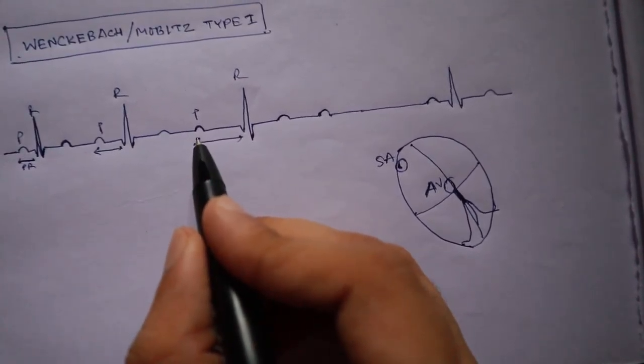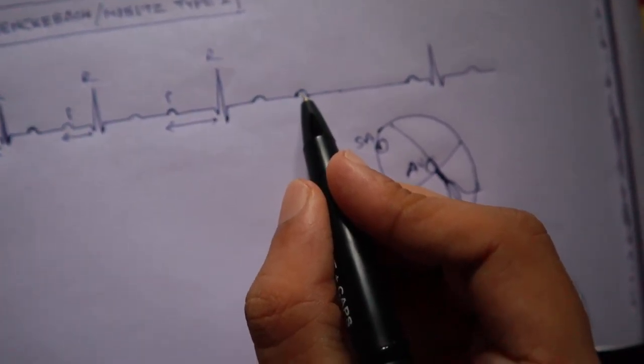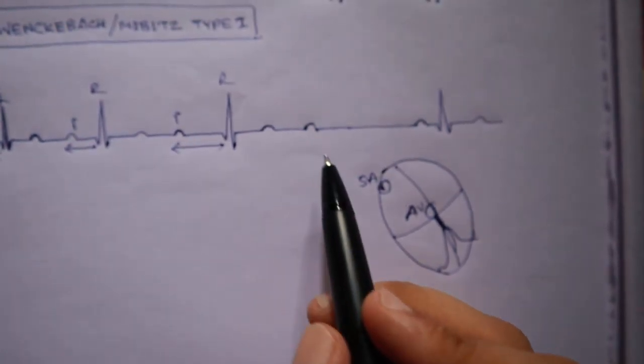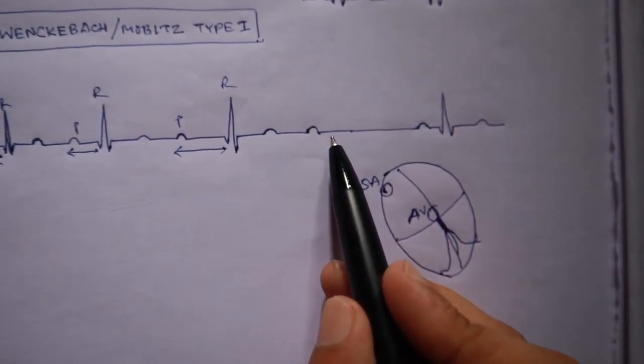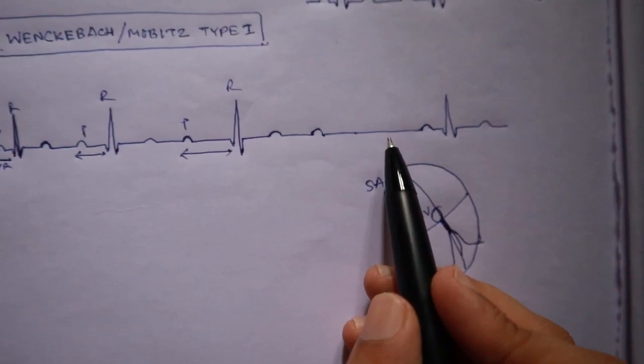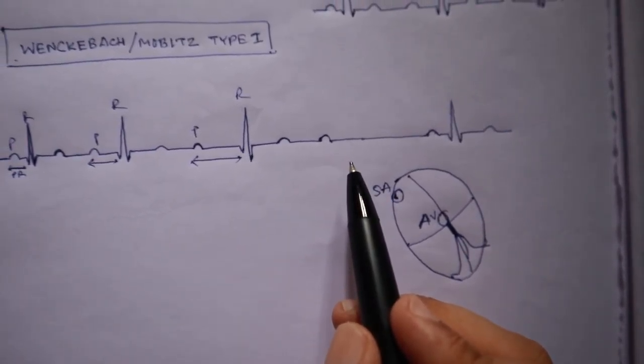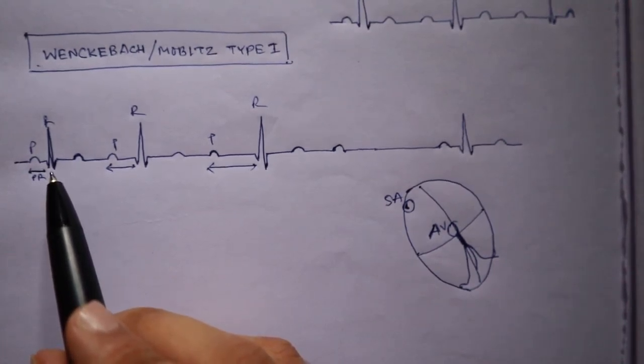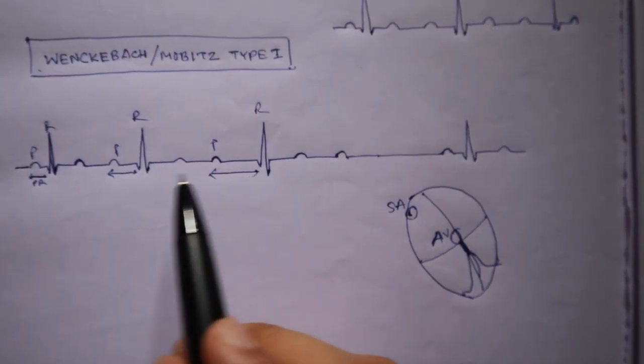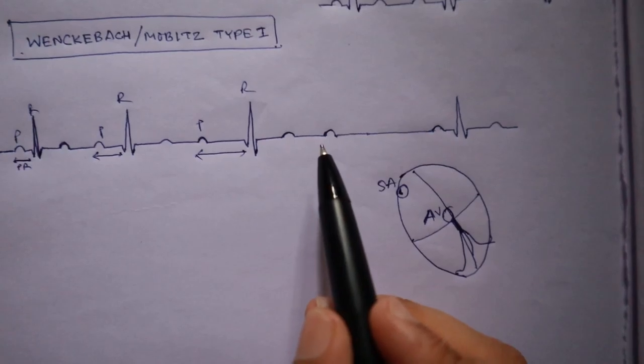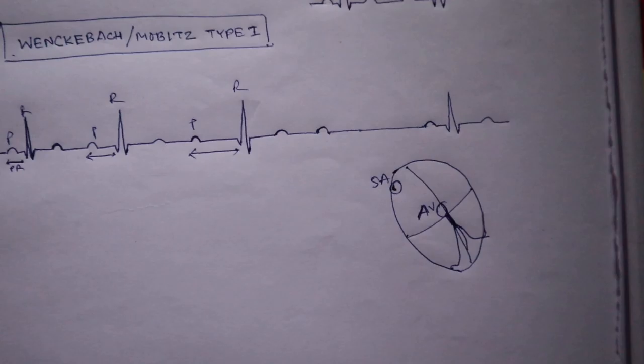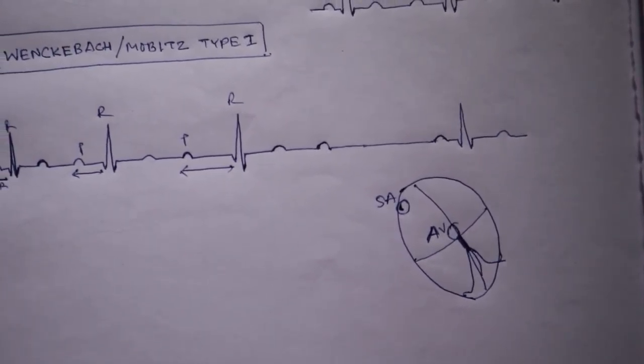And suddenly one QRS complex is missing. So this P wave that we can see is not conducting to the ventricle. This is Wenckebach phenomena, where the characteristic feature is progressive lengthening of the PR interval and one QRS complex consequently misses due to the AV block. This is Wenckebach or Mobitz type 1.